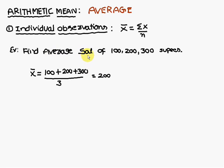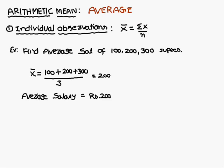The problem means the first person earns 100, the second person earns 200, and the third person earns 300 rupees in a family. To find the average salary of the family, we add all the salaries and divide by the number of persons to get 200. This type of problem is called individual observations — the first model. The formula to remember is x̄ = Σx/n.